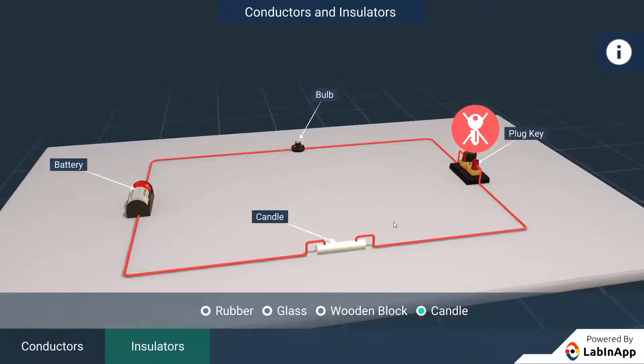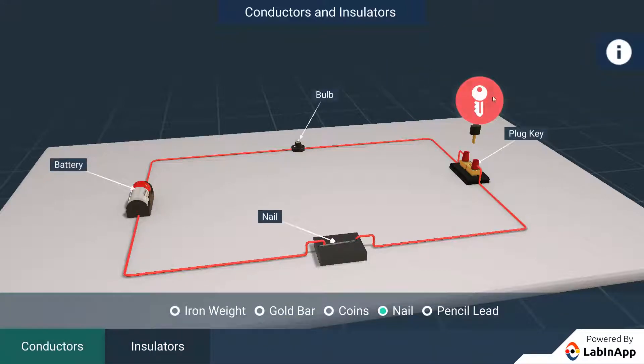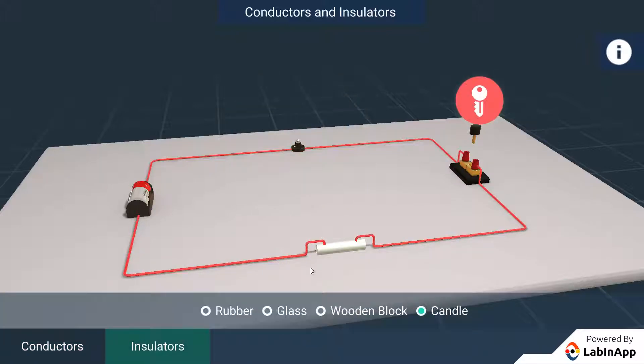We can see that the copper coin, gold, iron, pencil lead conducts electricity and the rubber, glass, wood and candle did not conduct.